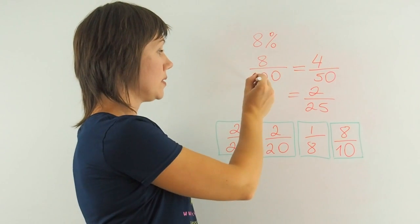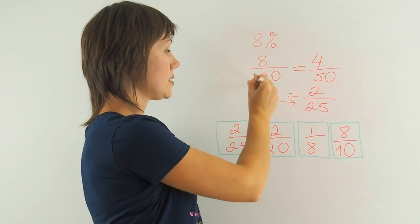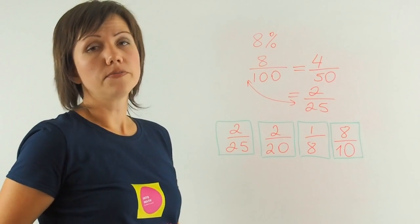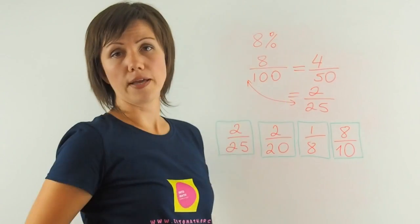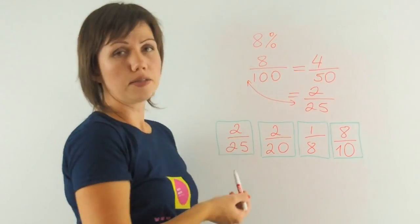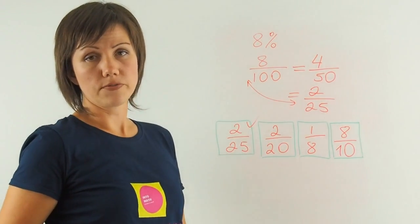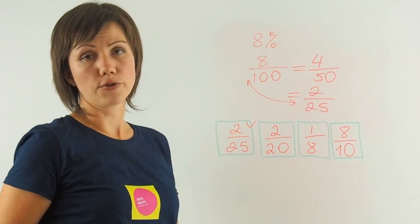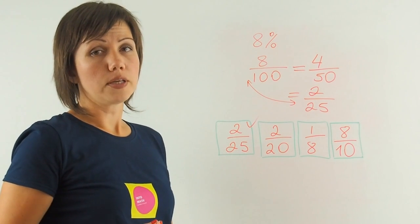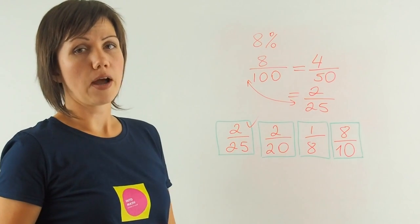In order to get from this to this number faster, you could have divided by 4 right away. 8 divided by 4, 100 divided by 4, and you would get 2 over 25, whichever works better for you. Your goal is to reduce to the simplest fraction.